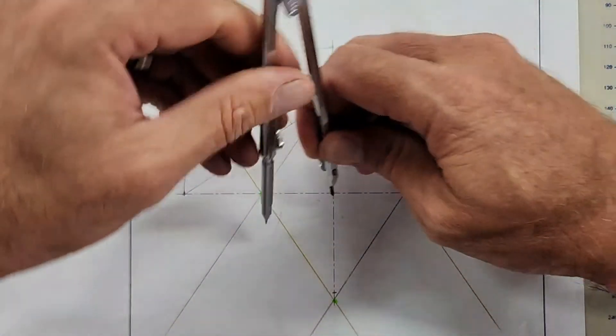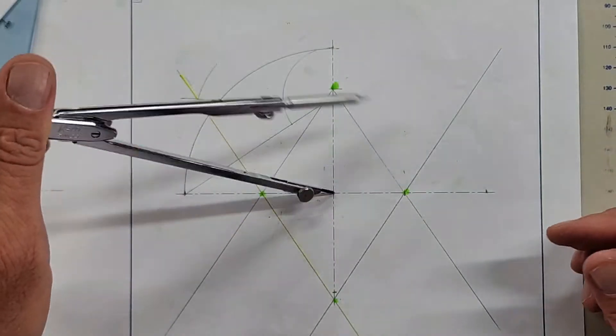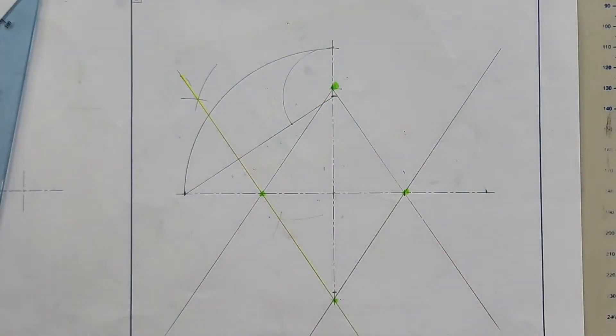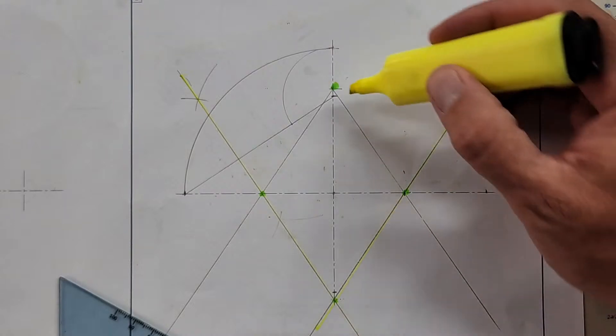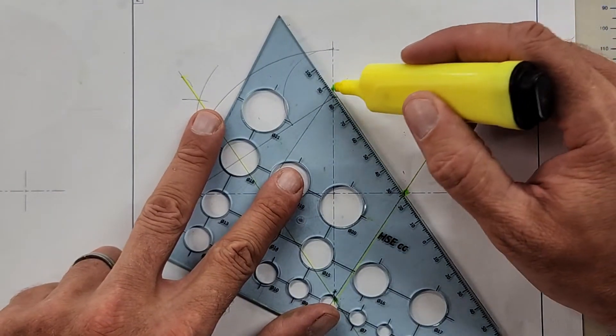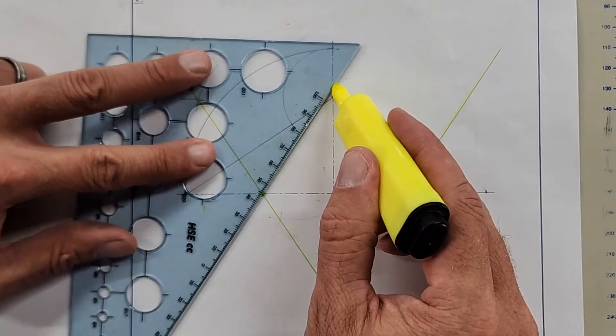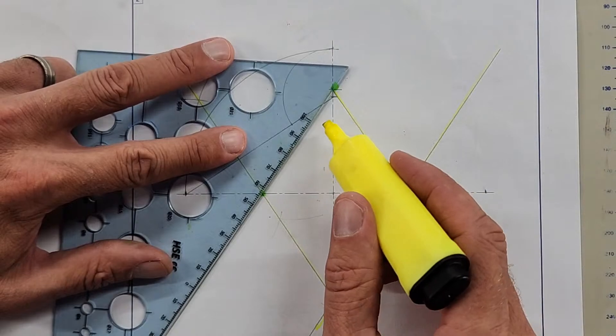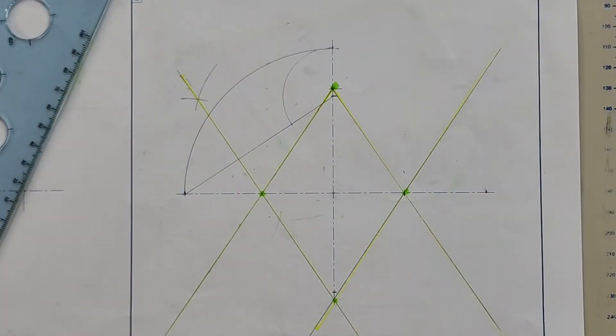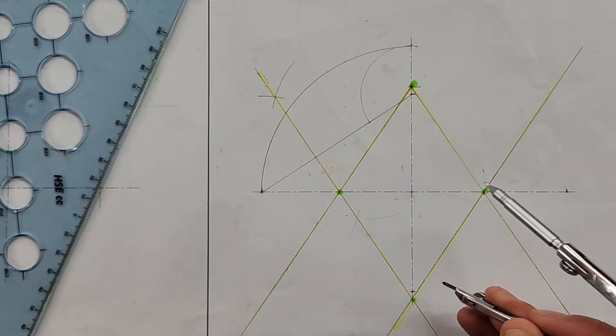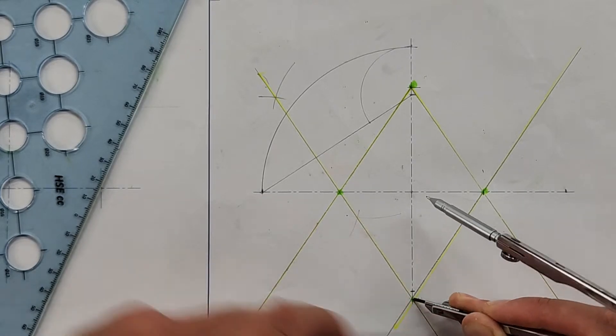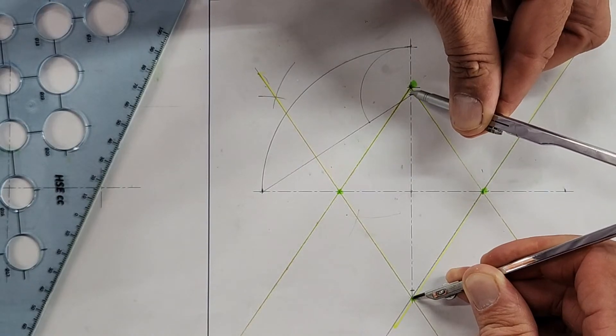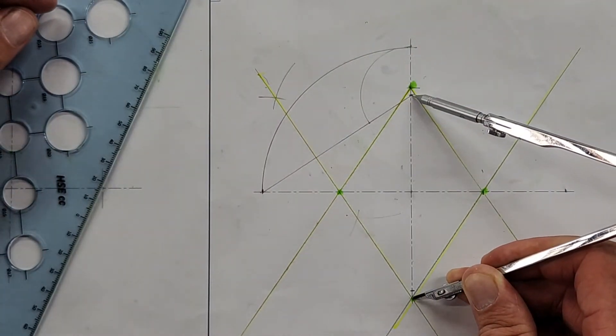Don't get confused by other markings—I'm just talking about the green marks. Then draw the guidelines through those green points, not the other dot that's very close. At this point, all the trouble I went to was for the green point. I'm setting my compass on that green point and going to the minor axis mark.